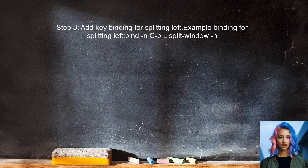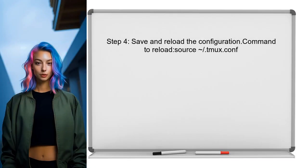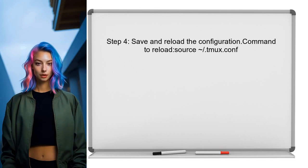For instance, you can use Ctrl+B followed by the letter L. After adding these lines, save the configuration file and then reload it within Tmux. This can be done by typing the command source .tmux.conf in the Tmux command prompt.